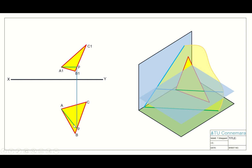We sometimes refer to this as the strike line. To locate the horizontal trace, we just need a single point on it. We'll use the method from method one: extend an existing edge until it meets the horizontal plane. Taking edge CA and extending it onto the ground gives us a point on the horizontal trace. We then use our sliding set squares to draw a line parallel to the watermark PA through that point, and the horizontal trace is located.